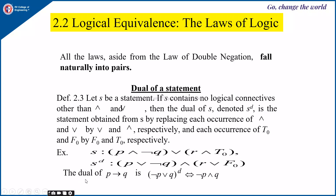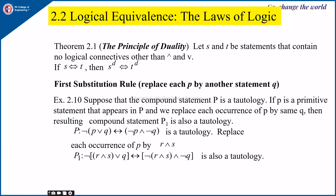If the given statement is P→Q, we first write it as ¬P∨Q, and the dual of this is ¬P∧Q. The principle of duality states: let S and T be statements containing no logical connectives other than ∧ and ∨. If S is equivalent to T, then the dual of S is always equal to the dual of T.